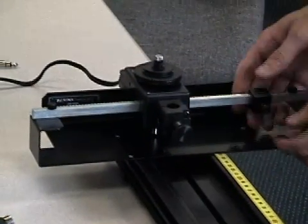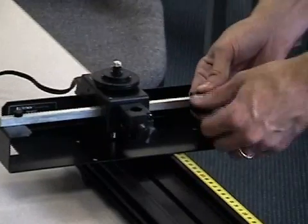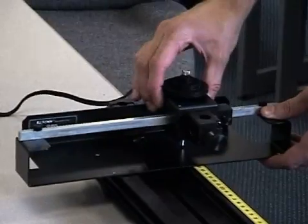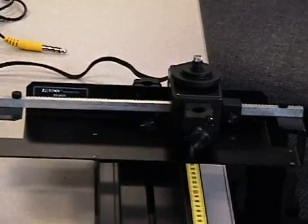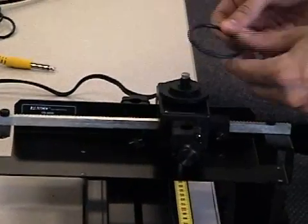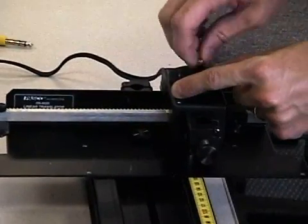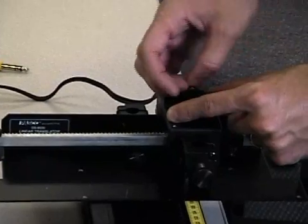The linear translator has this bracket here which you can tighten up to make a stop position so that the rotary motion sensor always returns back to the original position. Notice that I've removed the O-ring from the large pulley wheel. Then you'll want to remove this metal screw from the top of the pulley.